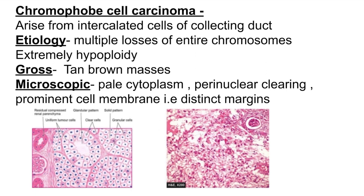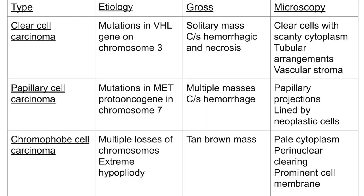In chromophobe cell carcinoma, there are no specific mutations, but there is loss of multiple entire chromosomes causing extreme hypoploidy. Grossly you can see a tan-brown mass. Microscopically, there are three distinctive features: pale cytoplasm, perinuclear clearing, and a prominent cell membrane with distinct margins.